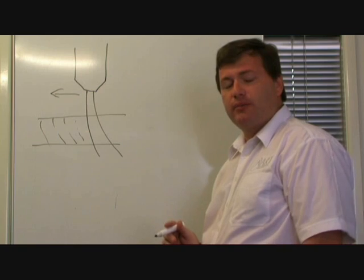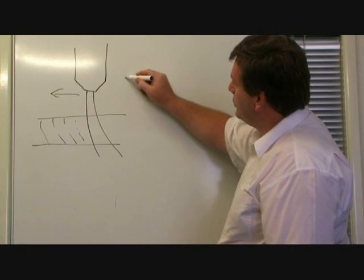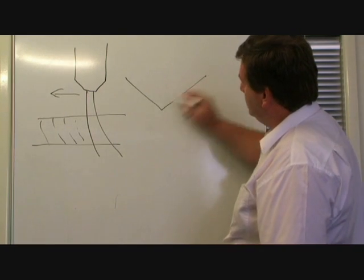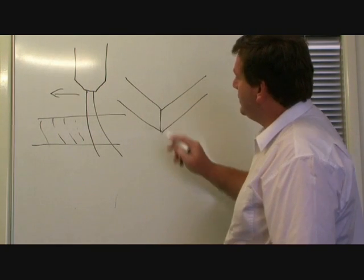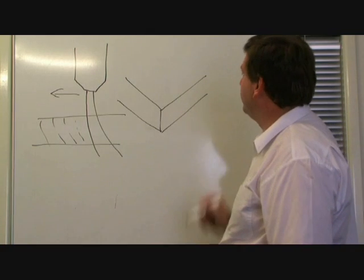But something happens when you come to a corner. Now, I'll just draw the corner of our part, a little bit of a diagonal view here. So this is the corner that we'd like to achieve, a nice sharp corner.